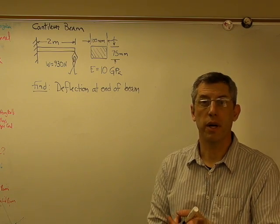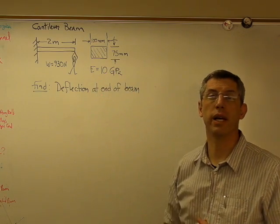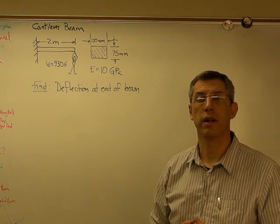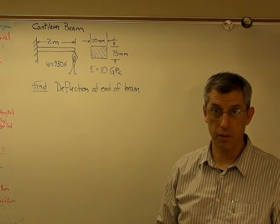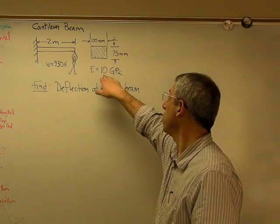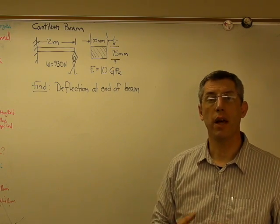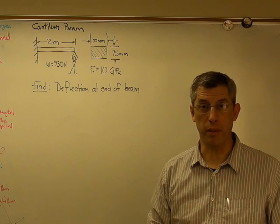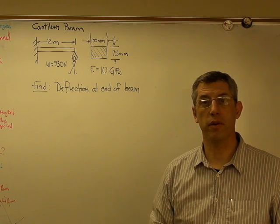If the elastic modulus of this wood is 10 gigapascals and the elastic modulus of steel is 200 gigapascals, all other things being equal, the steel beam would be 20 times as stiff because 20 times 10 is 200. The other thing that tells you how stiff a beam is or how resistant it is to deflection is the area moment of inertia.